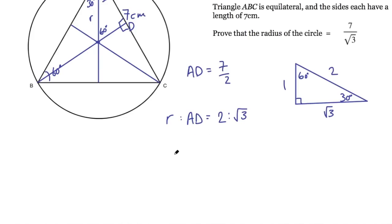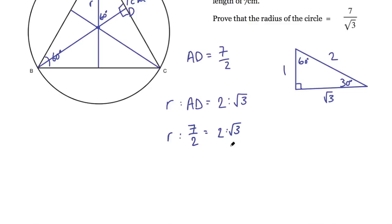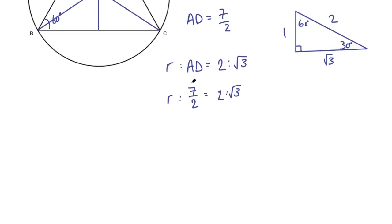Now I know what AD is. So I can say the ratio of the radius to AD is R to 7 on 2 equals 2 to root 3. If I rewrite these as fractions, remember you can always write ratios as fractions, I can say that R divided by 7 on 2 equals 2 on root 3.